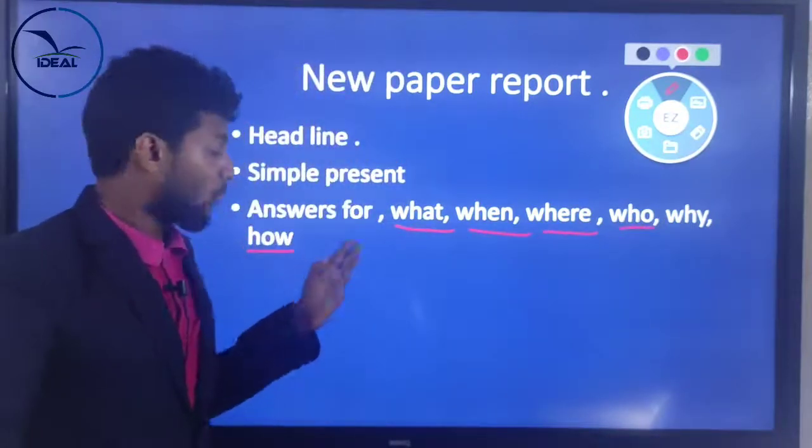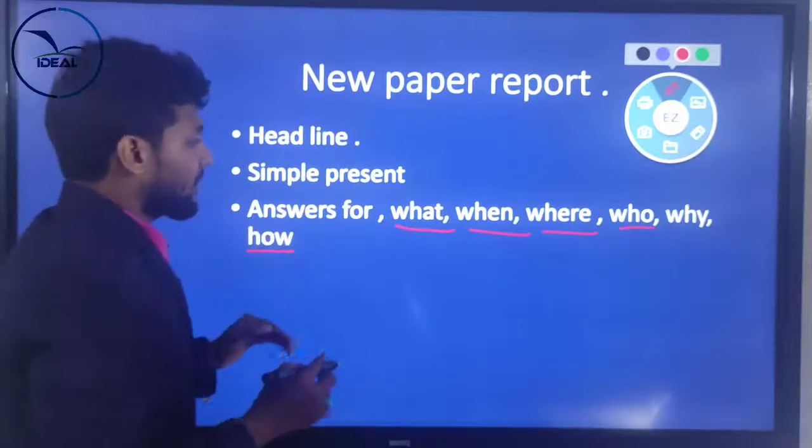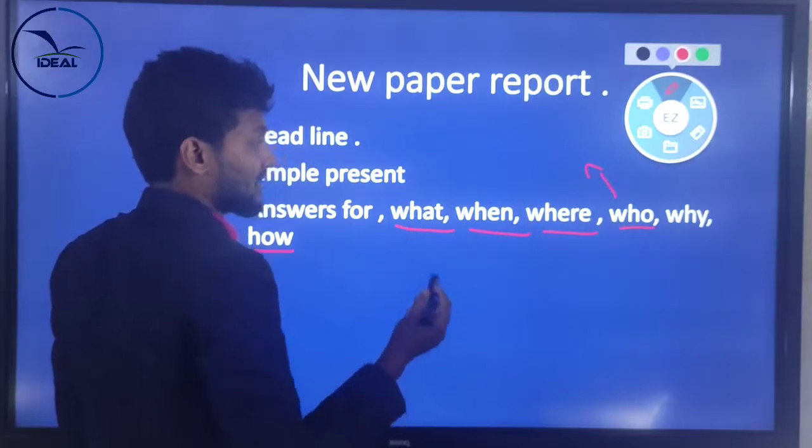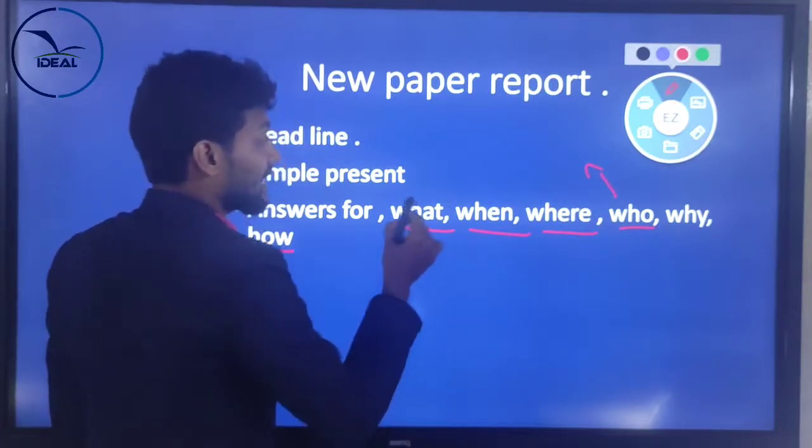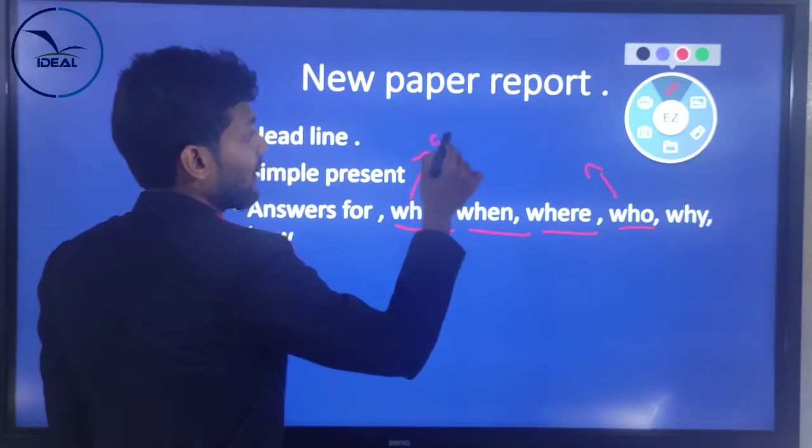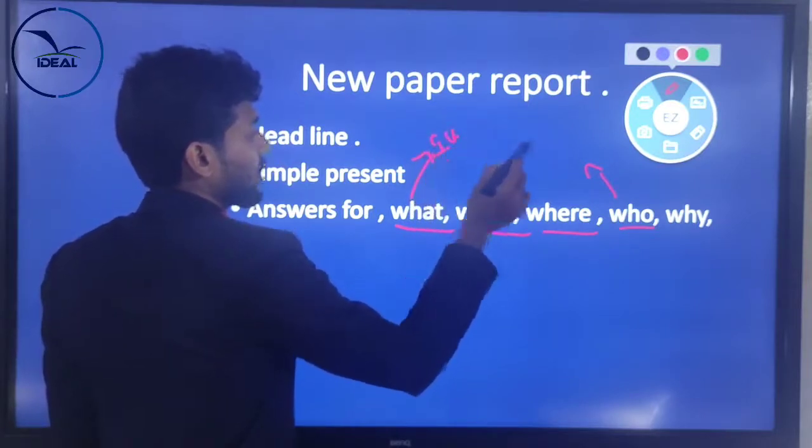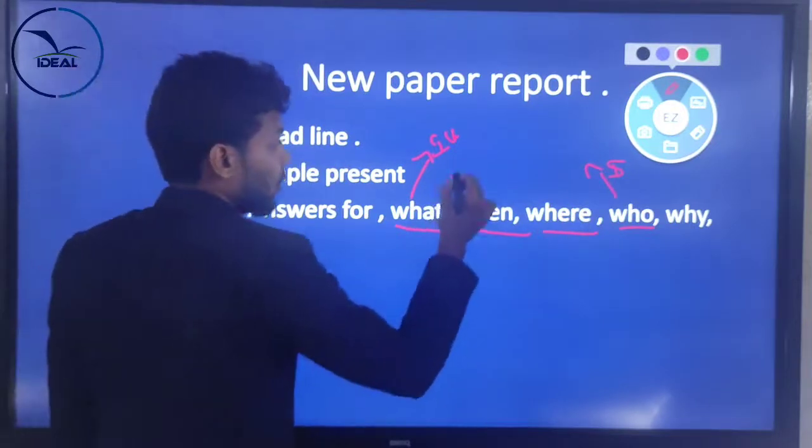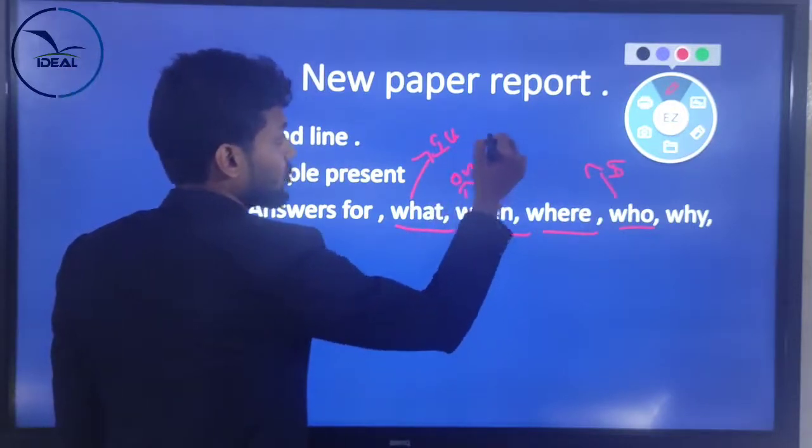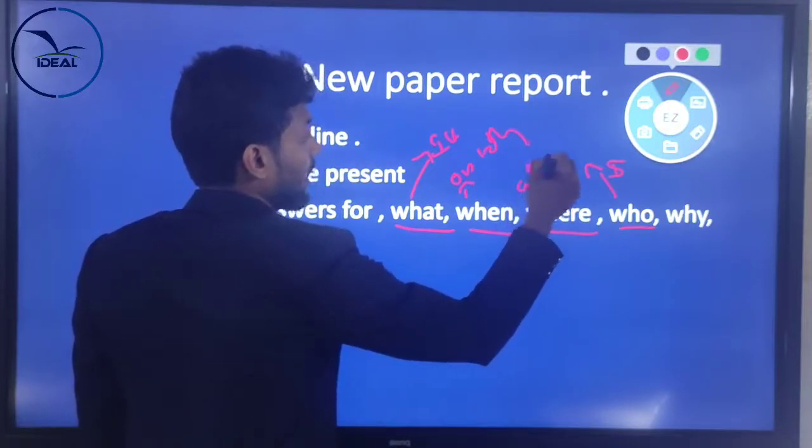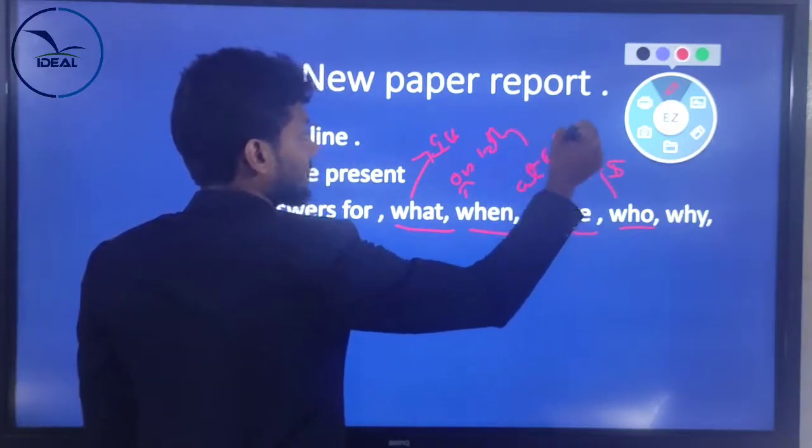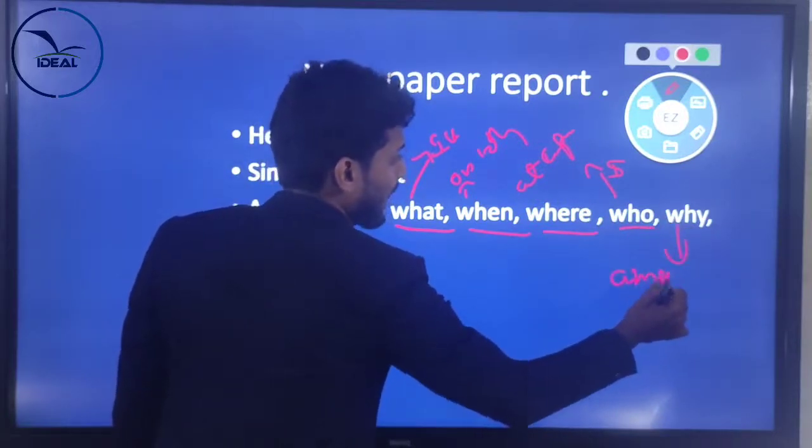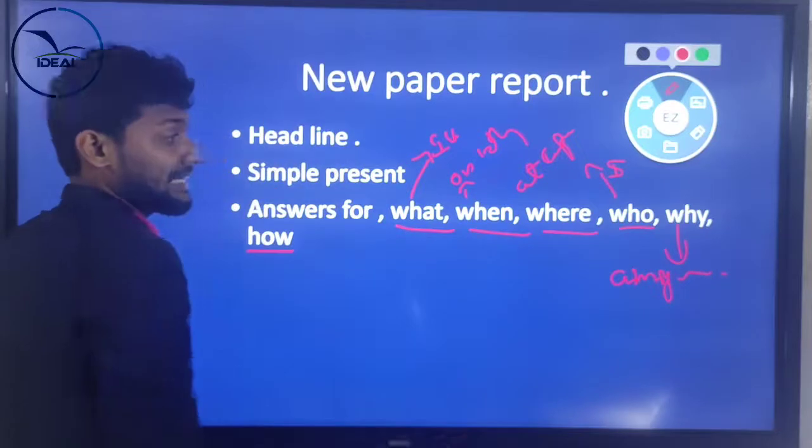Just remember: five WH questions and one How. For example: The Ideal International School conducted an international webinar - what? International webinar. Why? It was aiming at improving the language and presentation skills of the students.